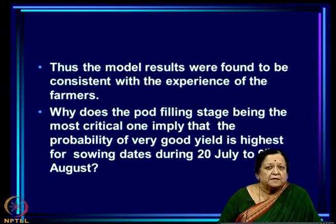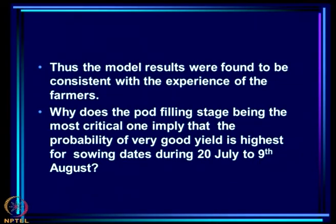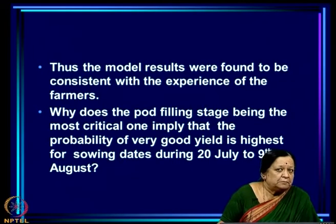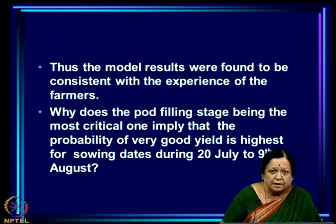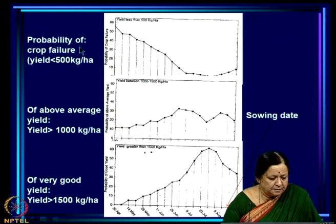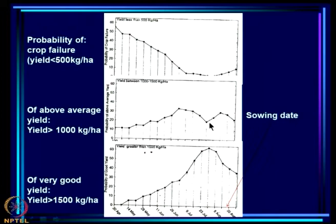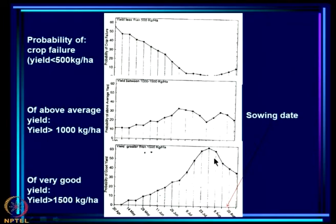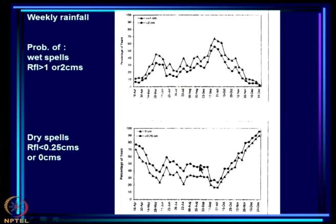The model results were found to be consistent with farmer experience. Now the question is: why does the pod filling stage being the most critical imply that the probability of very good yield is highest for sowing during 20th July to 9th August? We have two results: very high probability of good yields when sowing between 20 July and 9 August, and pod filling stage is most critical. Is there a connection between the two?